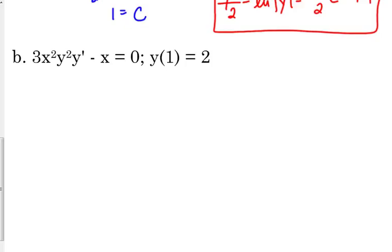We're starting with everything mixed up. We have 3x squared y squared y prime minus x equals 0, and we're given the condition that y of 1 is equal to 2.